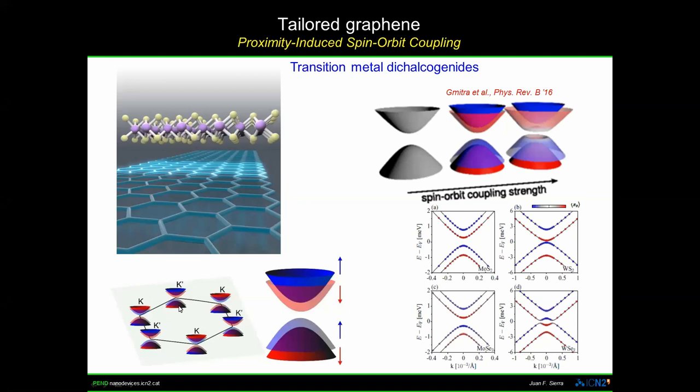The first question is: if I have spins propagating along this graphene channel, is there any influence of this spin texture that is imprinted by the high spin-orbit coupling material in graphene? So if you look at the spin texture of the graphene band structure, you see spins close to the K point that are pointing out of plane in a sequence alternating between the K and K' points. This is something we tried to answer and will show you now.